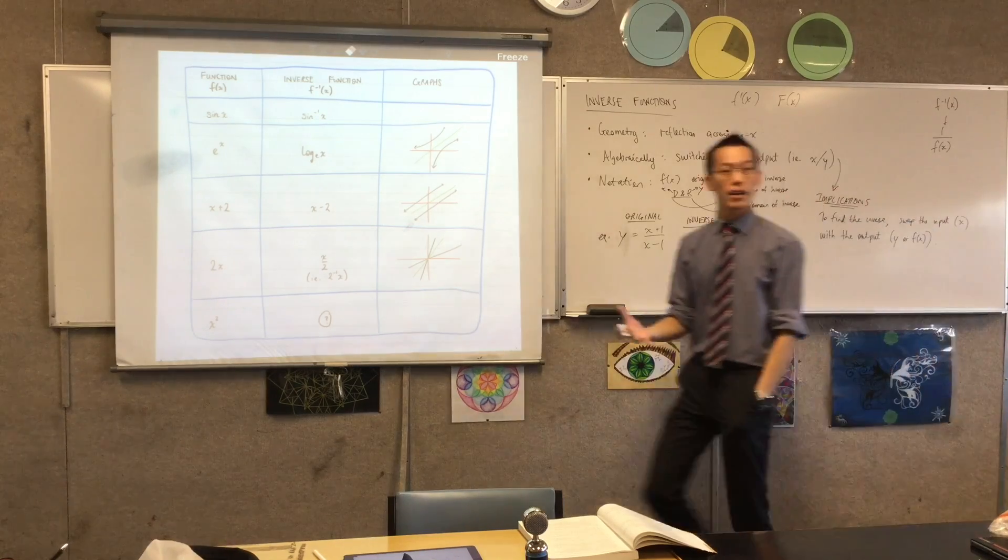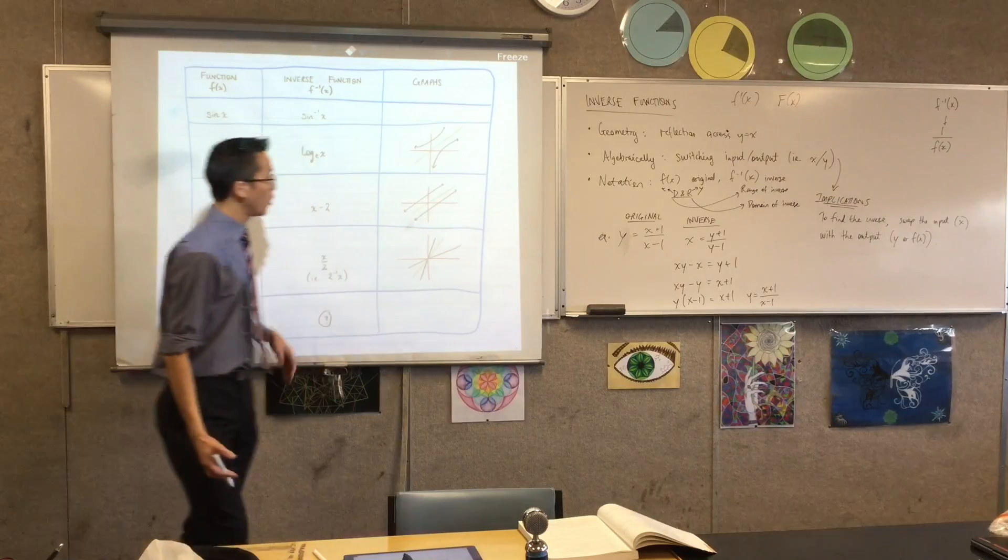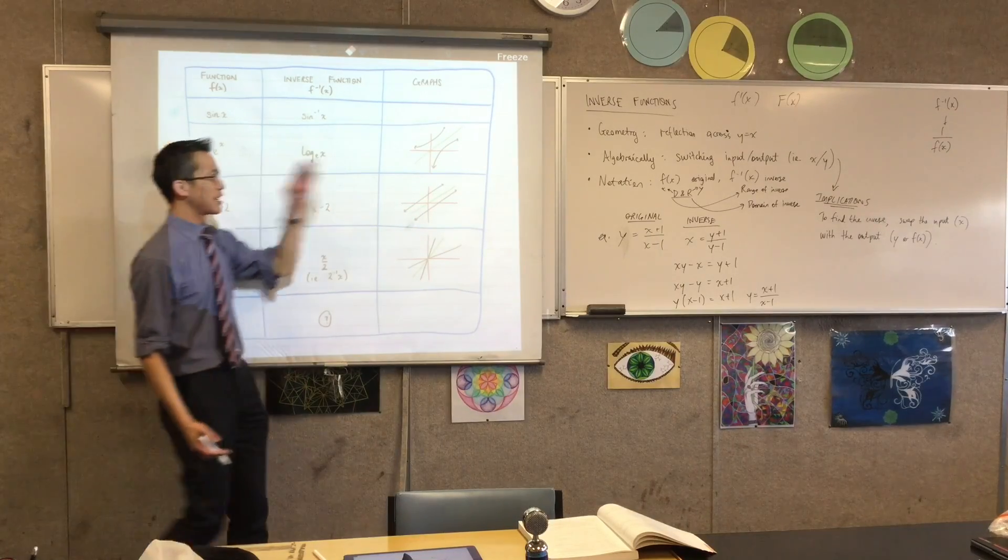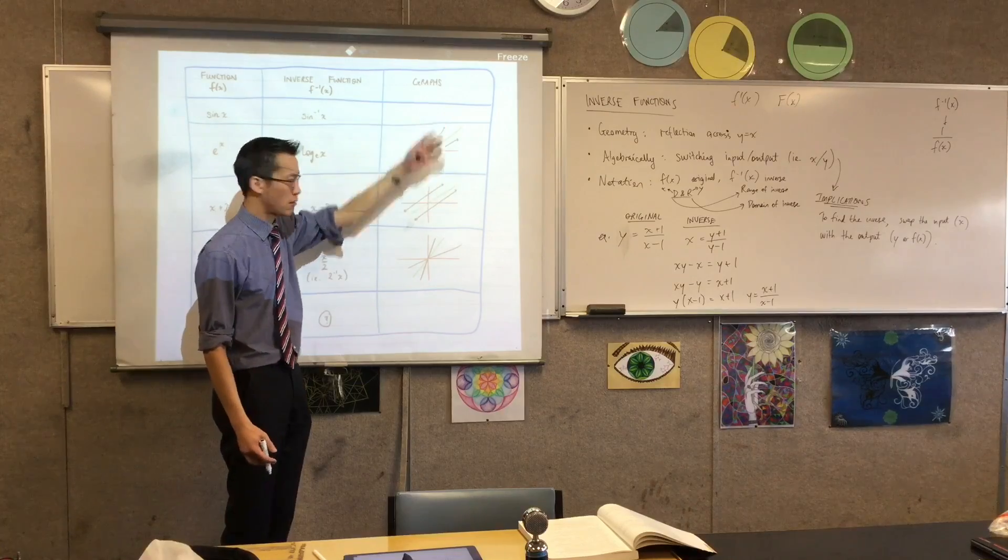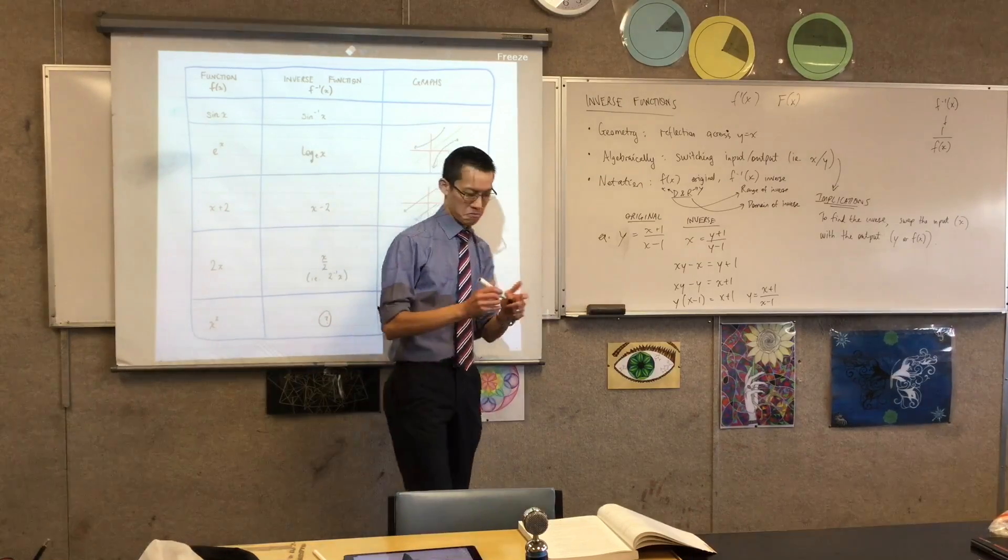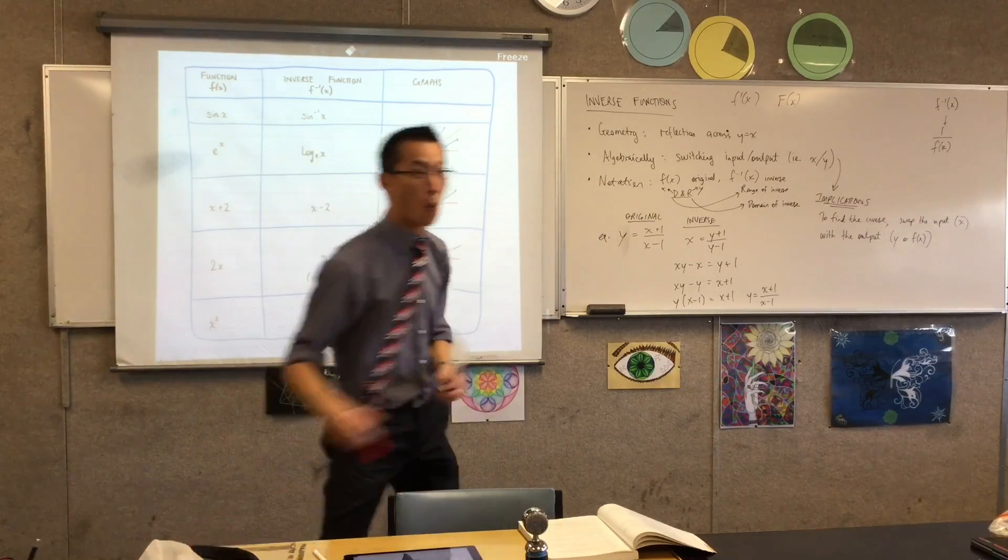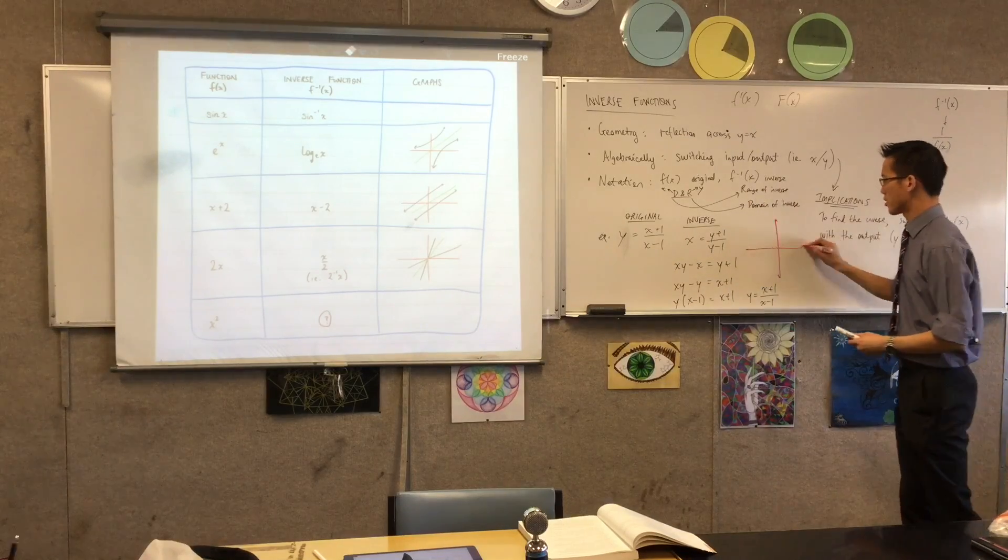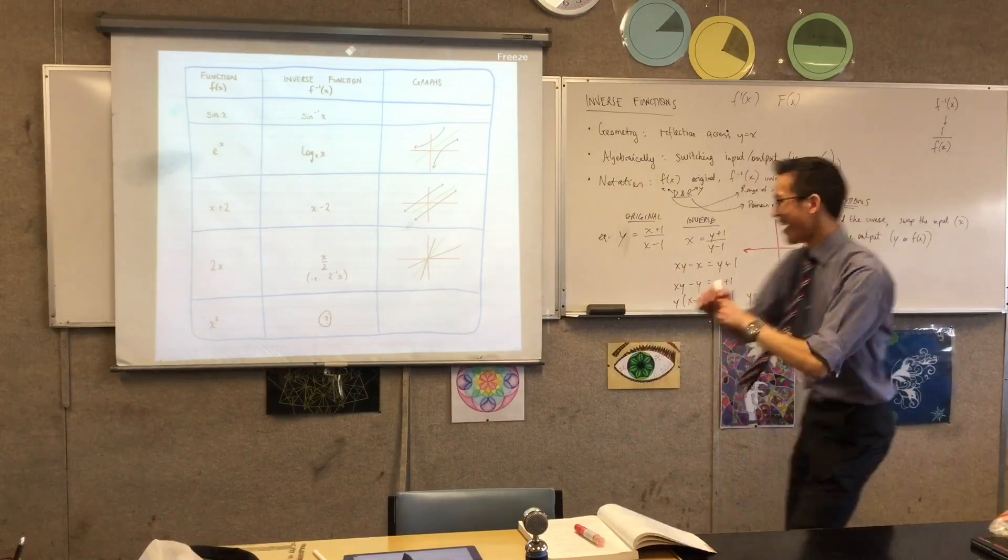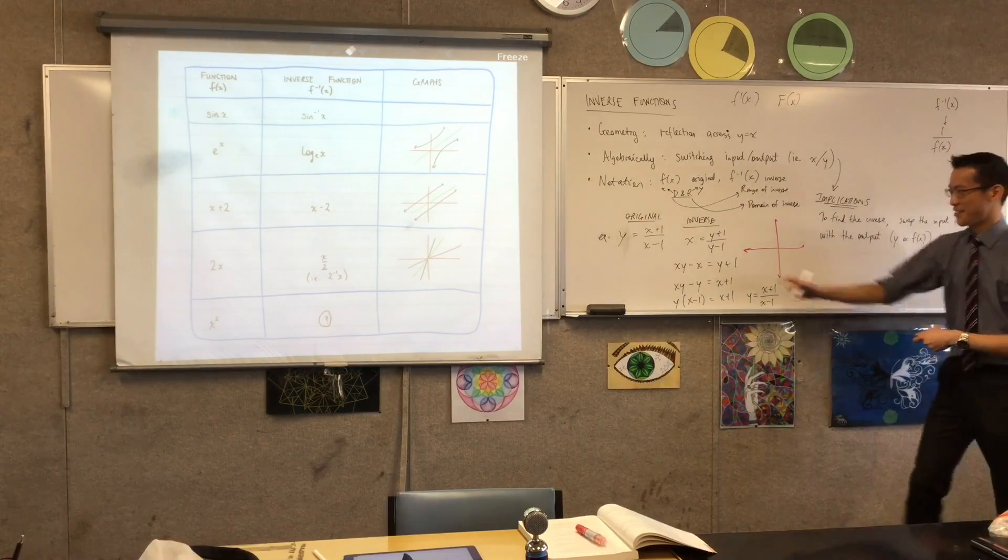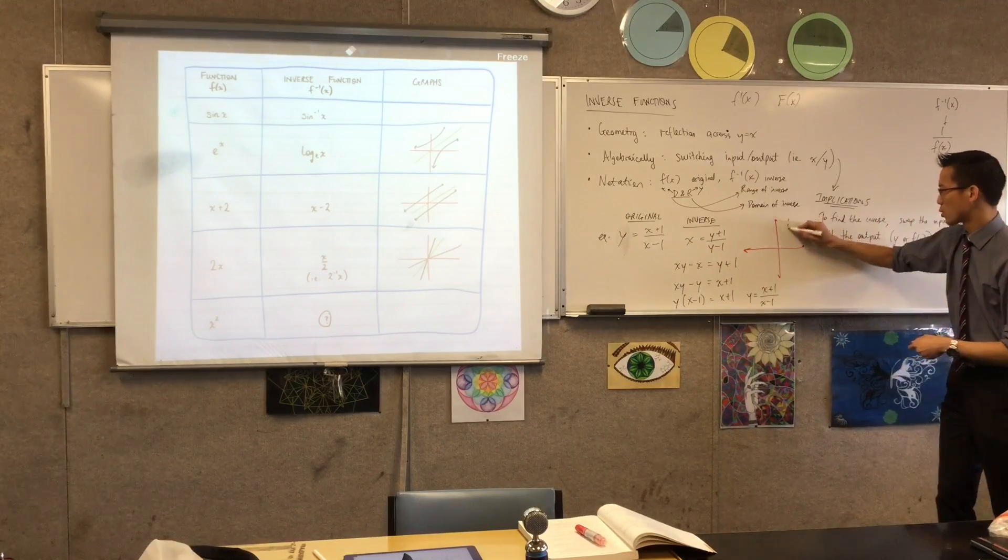So come back, come back to what we said right at the beginning, which is that geometrically, the way to get to a function and its inverse, the relationship is a reflection. Right. Okay, so what does this look like? That's not a rhetorical question. What does this look like? Come on, tell me something you know about this graph.